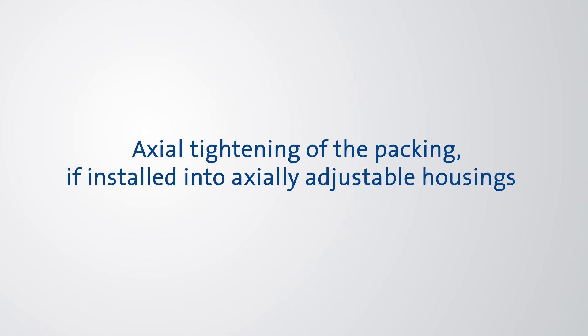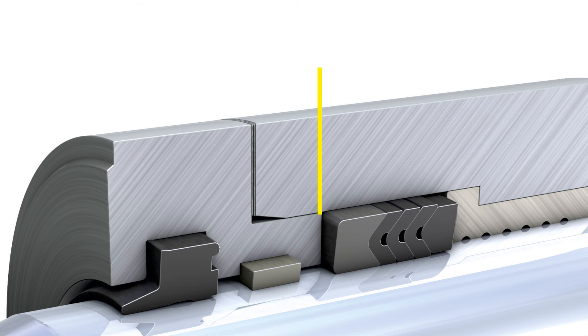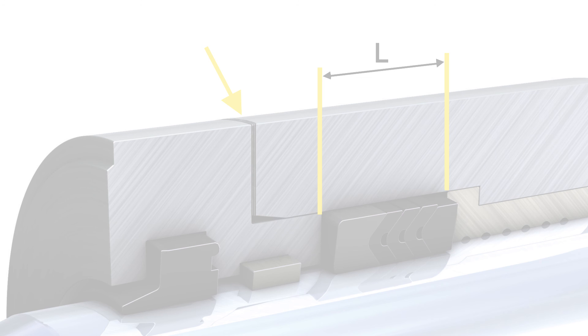Axial tightening of the packing if installed into axially adjustable housings: Based on the described basic setting, the actual length of the housing can be adjusted by adding or removing shims. Careful installation and monitoring during the run-in time have a major influence on the lifetime of the seal.